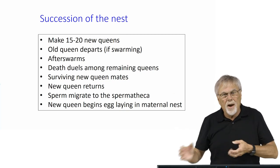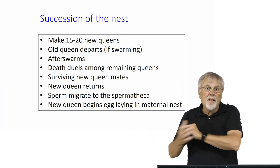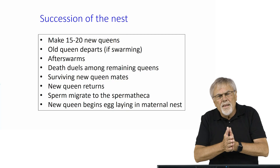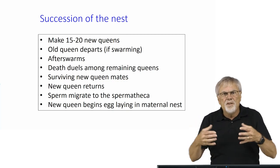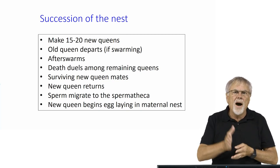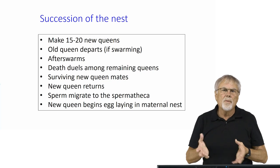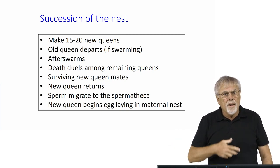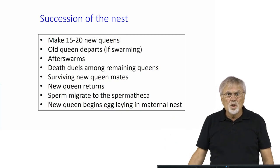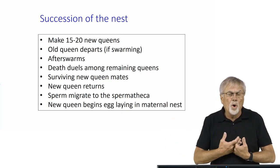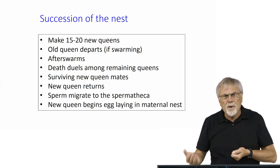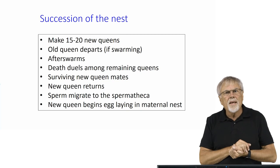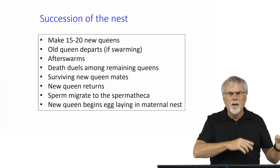Sometimes what we call after swarms go. After the queen leaves with half the bees, none of the virgin queens may emerge and then take off, and some of the bees will go with her also — that's an after swarm. But then in the end, after the swarming and after swarming, there's a duel to the death among the remaining queens that are left behind of the 15 to 20 new queens produced during the swarming event. The surviving queen of that duel will then go out and mate — she'll fly through the air and mate, then return to the nest. The sperm she picked up on her mating flight will migrate into the spermatheca. About one to two weeks after she emerged as an adult, she'll begin egg laying in the maternal nest — the nest left behind for her when her mother left.